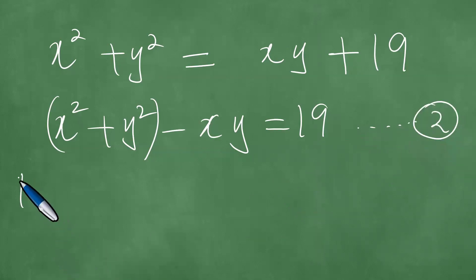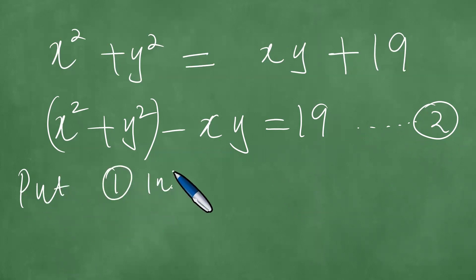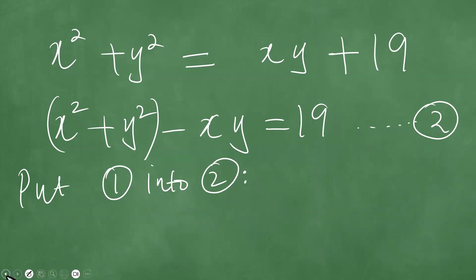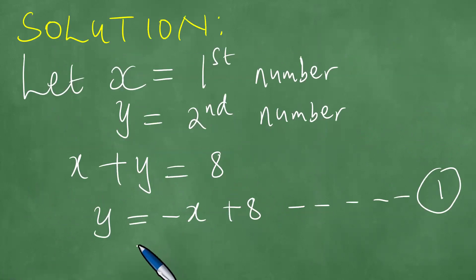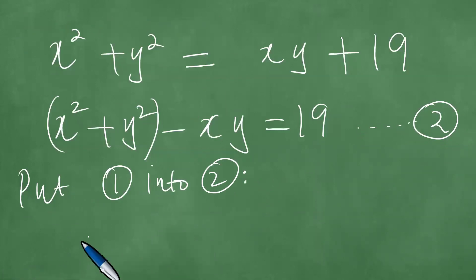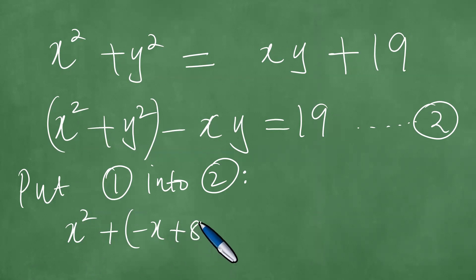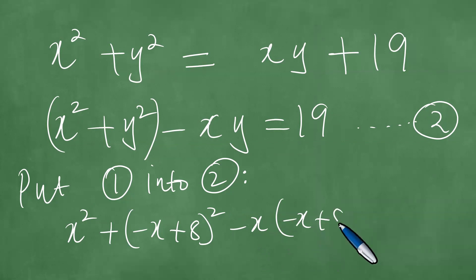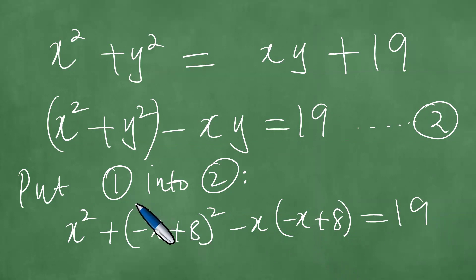Now we proceed to put equation one into equation two. Substituting y equals minus x plus 8 into equation two: in the place of y we have minus x plus 8, squared, minus x times minus x plus 8, and the result is 19.